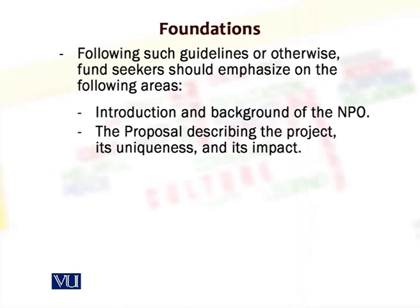They should talk about the project in detail by describing its salient features, the uniqueness of the project or program, and the impact that program will have on the society in the area the nonprofit and grant giver are jointly interested in. The proposal should also talk about budgetary requirements for the project. The organization has to carry out detailed financial analysis — the proposal may carry as annexes the salient numbers representing the overall financial working.